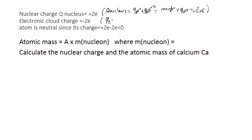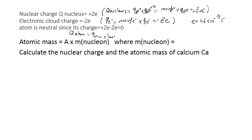Similarly, the charge of electrons equals number of electrons times the charge of one electron. In a neutral atom, number of electrons equals Z, and the charge of one electron is negative, so charge of electrons equals minus ZE, where E equals 1.6 times 10 to the power minus 19 coulombs. Since charge of atom equals plus ZE minus ZE, it equals zero — the atom is electrically neutral.